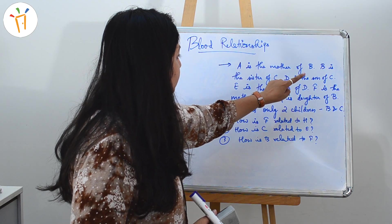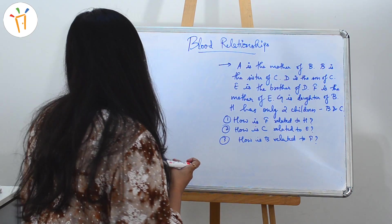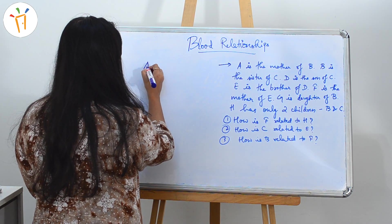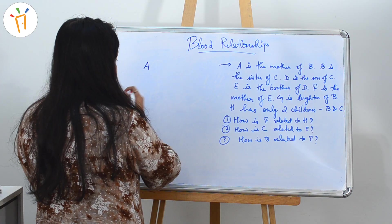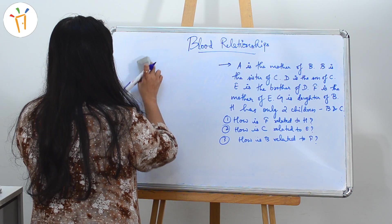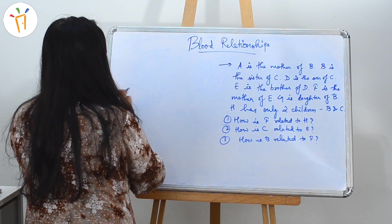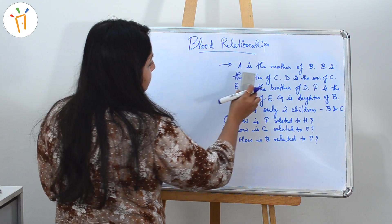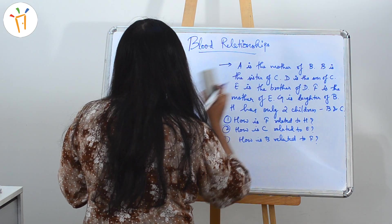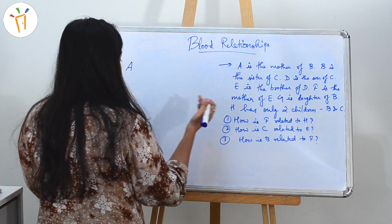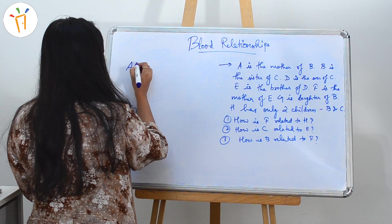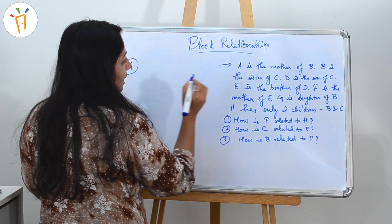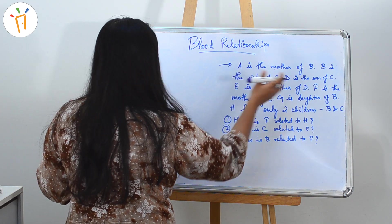The questions are: how is F related to H, how is C related to E, and how is B related to F? Let's start with the first line: A is the mother of B. So let's write A here — since she is a mother, she is female — and A is the mother of B, so we write B below.